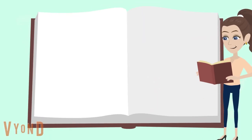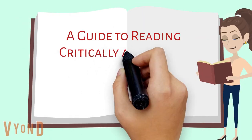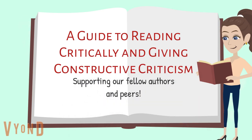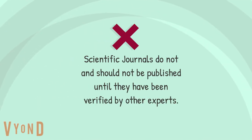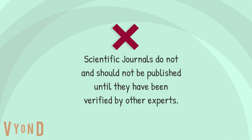This video is a guide to reading critically and giving constructive criticism when supporting our fellow authors and peers when writing a peer review. Peer reviewing in science is the cornerstone to research. Scientific journals do not and should not be published until they have been verified by other experts within that area of research. There are two elements to a peer review.